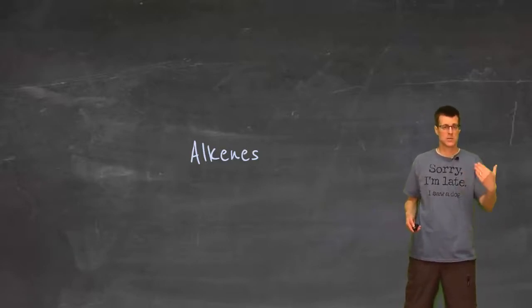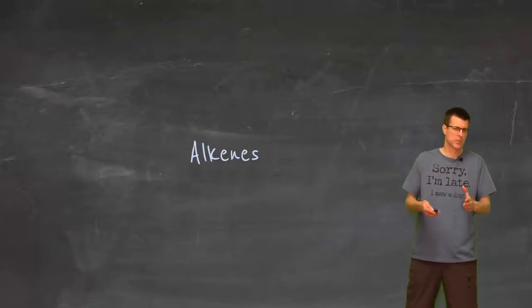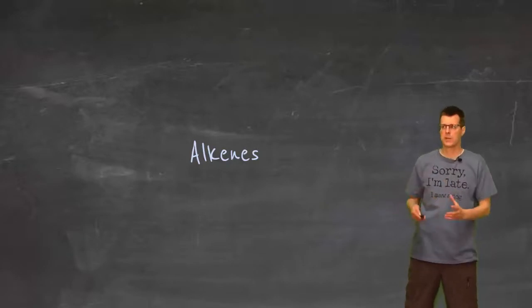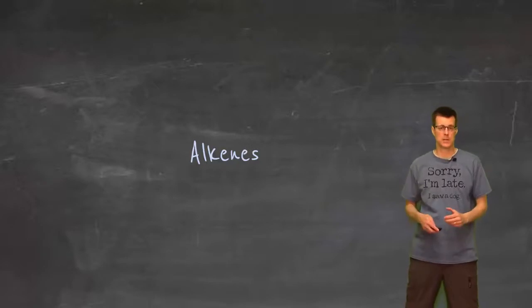What we're going to do is some of the same things we've already done. We're going to do nomenclature, we're going to do isomers. We won't really talk that much about the chemical properties of alkenes because that comes up later. But what we do want to do is see how what we already know fits with this new piece of alkenes.